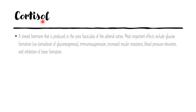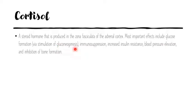We're going to briefly mention cortisol because it is relevant to the diseases we're discussing today, but if you want more information you can watch the video on Cushing's disease. Cortisol is a steroid hormone and a glucocorticoid, unlike aldosterone which is a mineralocorticoid. Its most important effects include the regulation of glucose formation via stimulating gluconeogenesis during periods of starvation, immunosuppression, increased insulin resistance, blood pressure elevation, and the inhibition of bone formation.